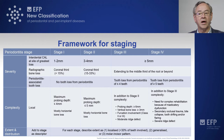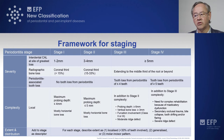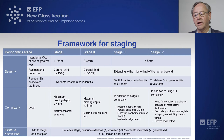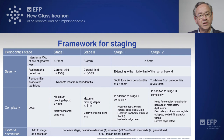Moving to stage three, we have advanced attachment loss of five millimeters or more, and advanced bone loss extending to the middle third of the root and beyond. Depending on whether the patient has lost fewer or more than four teeth, we stage at three or four. Additional criteria for stage three include deep pockets of six millimeters or more, intrabony defects with vertical bone loss greater than three millimeters, and presence of furcation involvement with a moderate ridge defect.